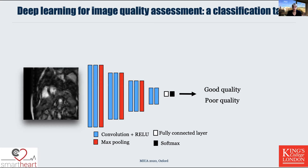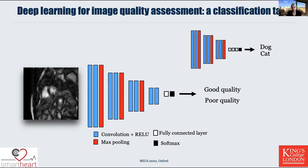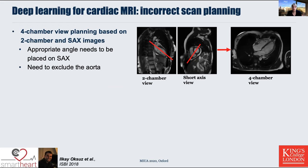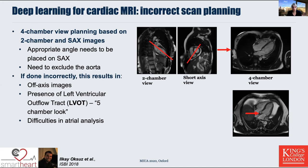Our first application is classification, looking at good and poor quality data. As I've mentioned, you can use a very simple encoder architecture for this — in real images, this would amount to classifying an image as containing a dog or a cat; here you'd be interested in classifying images into good or poor quality. Our first application applies to incorrect scan planning. In order to acquire a really nice four-chamber view of the heart, as shown on the right, we need to carefully acquire two-chamber and short-axis images. You need to apply an appropriate angle on the short-axis view and be careful to exclude the aorta.